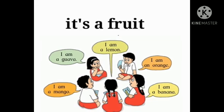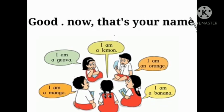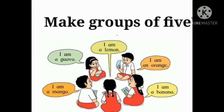It's a fruit. તે એક ફળ આહે. Do you know the English word for it? તેચ્યા કરિતા ઇંગ્રજી શબ્દ માહિત આહે ત્યા? Good. Now that's your name. આતા તે તુમ્ચે નાવ.